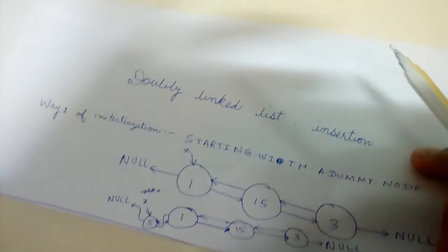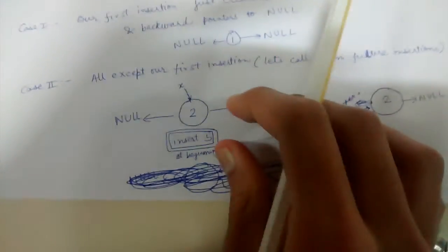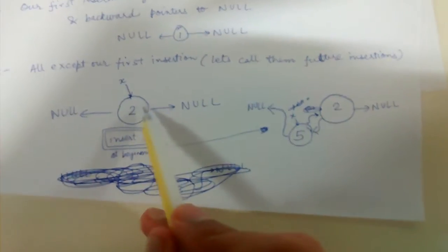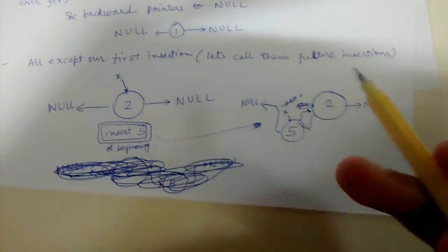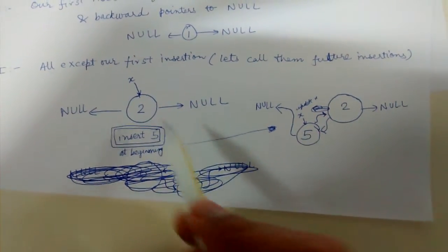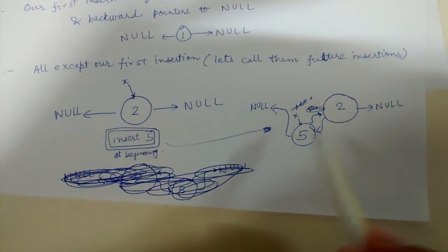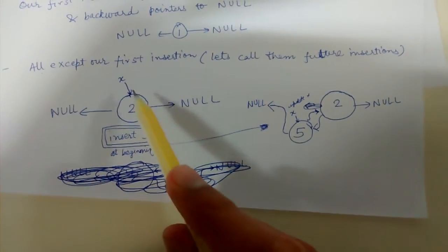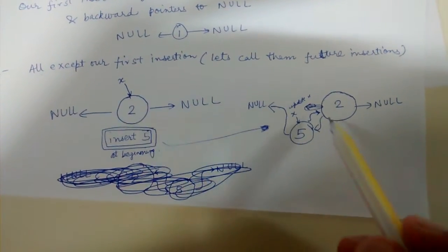So this is a second insertion. I'm taking the example of second insertion here. The future insertions are also similar to the second one. So I need to insert five in the beginning.